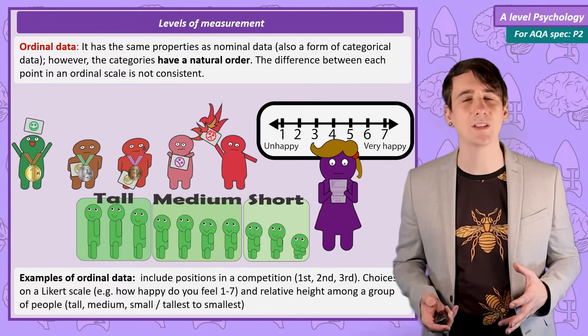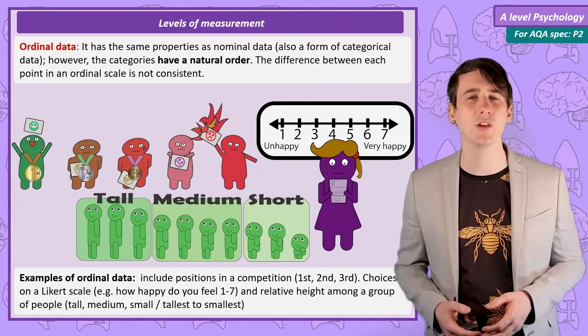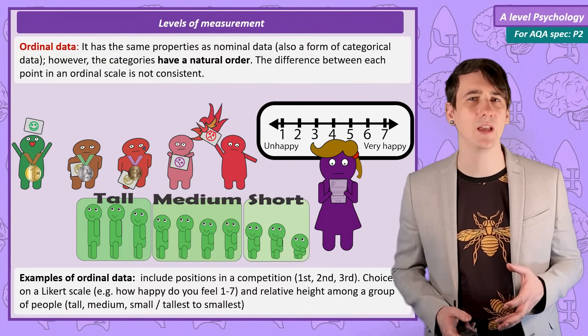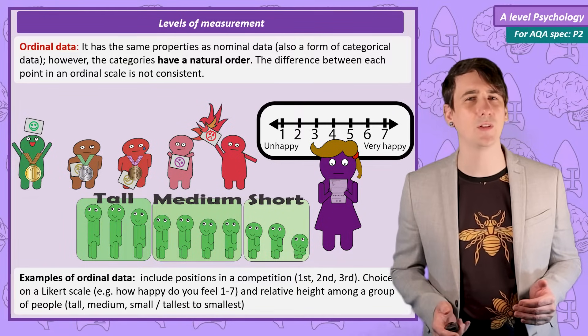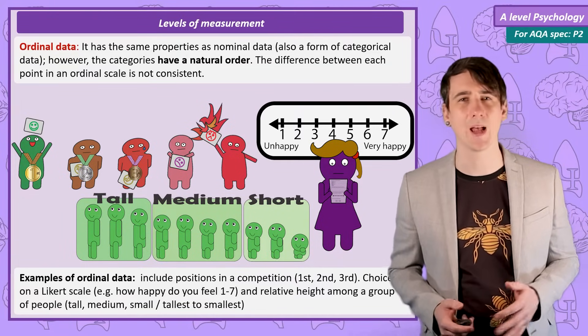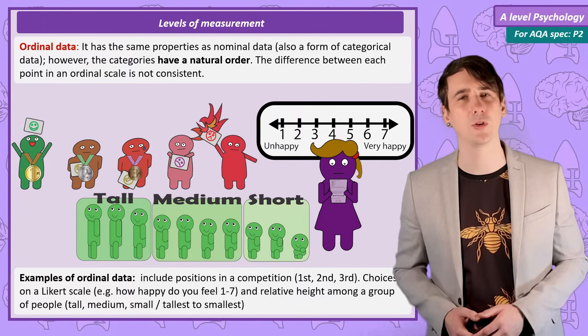And when reporting a sense of happiness, the difference between each point is subjective and vague. To say you are at the top of the scale at seven is certainly more than six, but it is likely not the same difference in happiness as choosing between a four and a three, and a two on a scale is certainly not exactly twice as happy as recording a one.